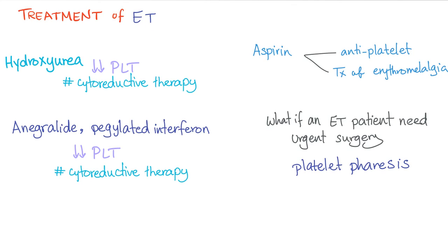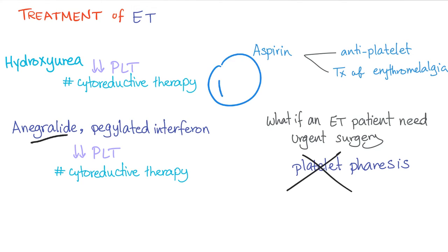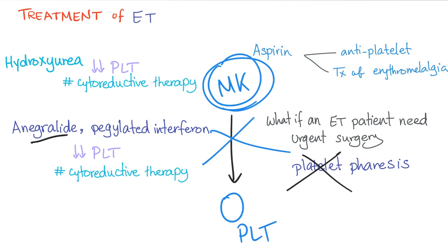Treatment of essential thrombocytosis: if the patient has lots of platelets with thrombosis and erythromelalgia, use aspirin. For platelet reduction, use cytoreductive therapy such as hydroxyurea or anagrelide. If the patient needs urgent surgery, you can do platelet pheresis to rapidly remove platelets. Anagrelide is a phosphodiesterase inhibitor that blocks the maturation of megakaryocytes into platelets, making it helpful for treating ET.